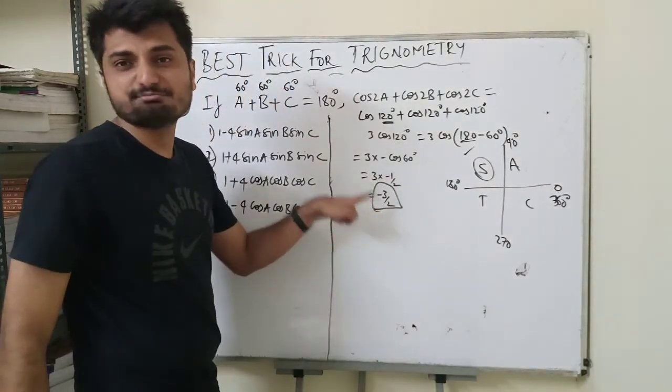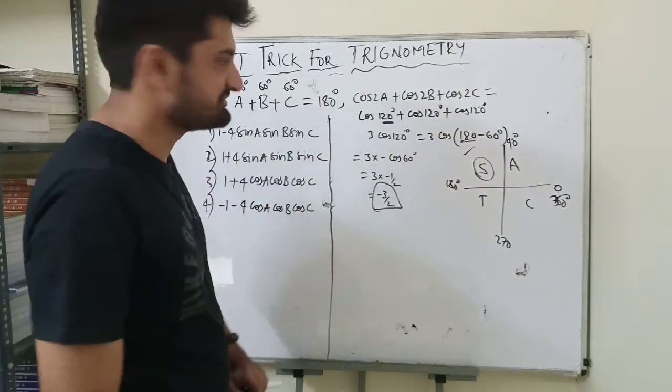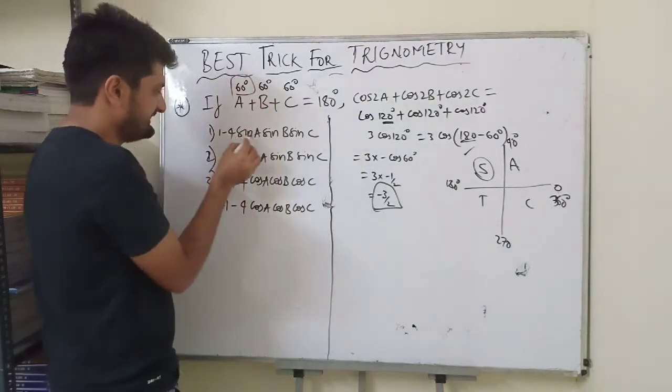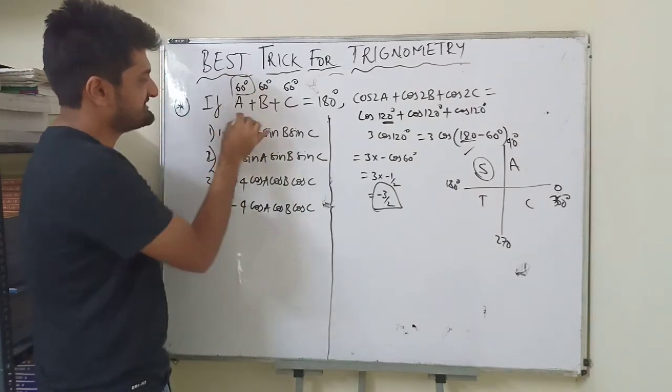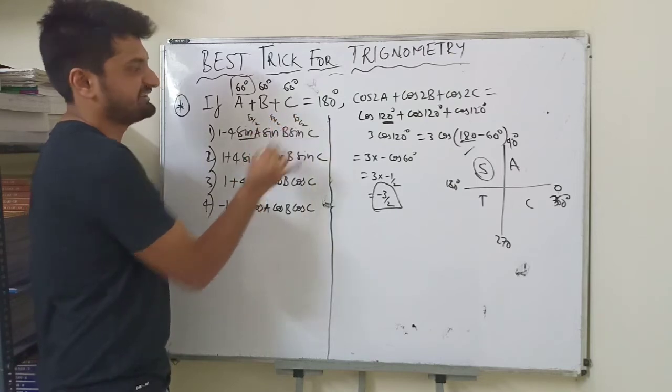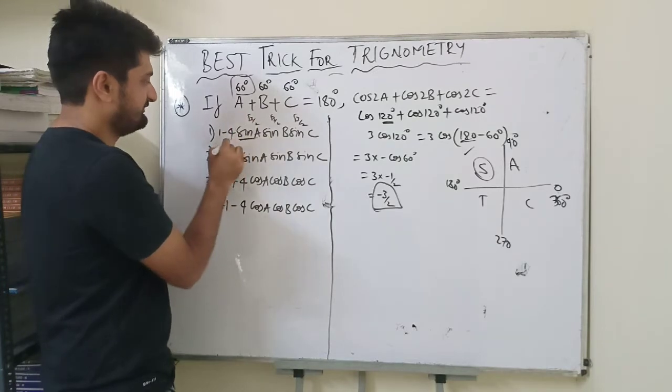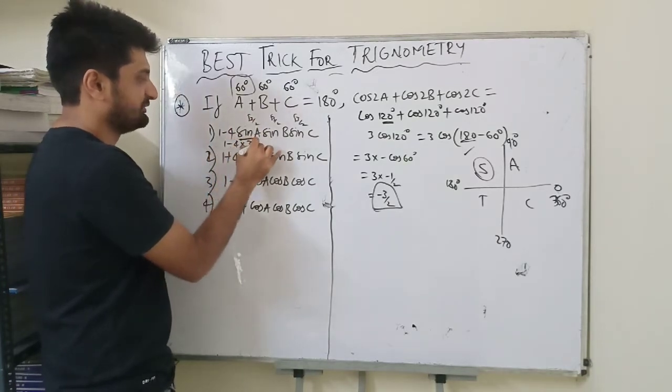Now let us substitute the same in the options. First option is in terms of sin. What is sin60? Sin60 is root 3 by 2. This will be 3 root 3 by 8. So this value will be 1 minus 4 into 3 root 3 by 8, 4 goes 2 times—not satisfying.